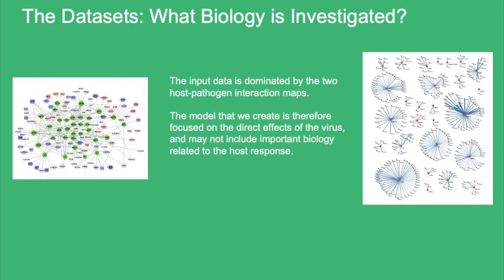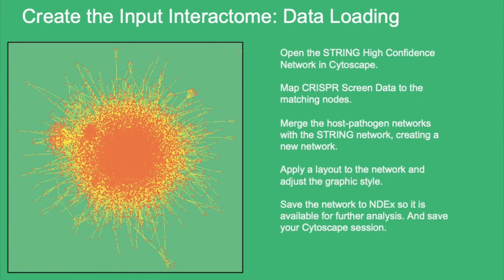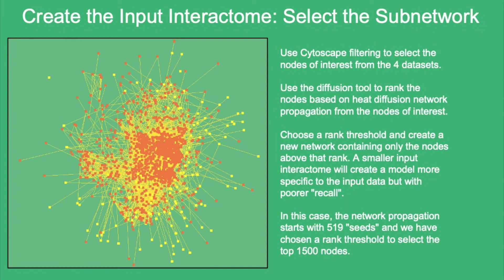The data defines the set of protein nodes that will be at the center of our model — in this case, primarily the human proteins bound by the viral proteins. Now we select a large network of known protein interactions, which will be the substrate for our model building. Then we select a subset of the large network that is the neighborhood around our proteins of interest. The neighborhood is found using the Cytoscape Diffusion tool — it works by considering the starting nodes as hot and then letting that heat diffuse out across the edges. After a specified amount of diffusion, we create the subnetwork from the nodes that retain the most heat.